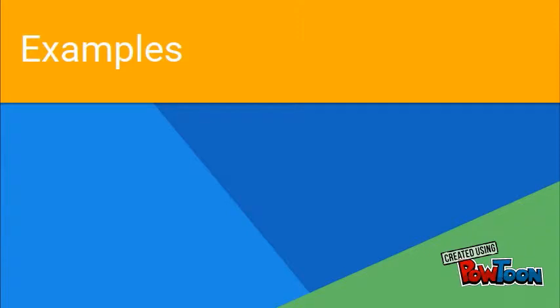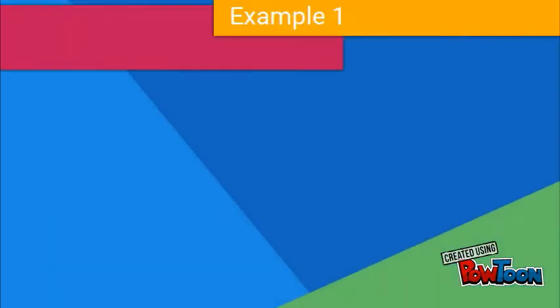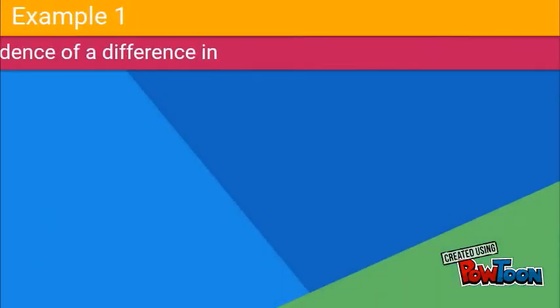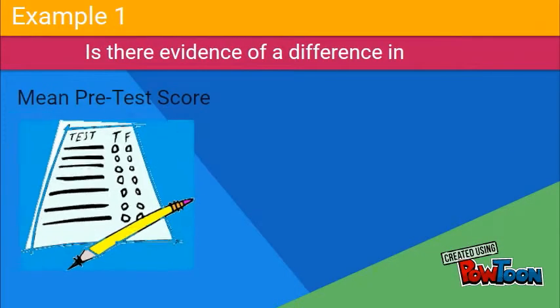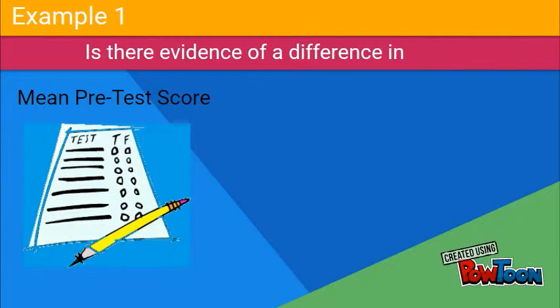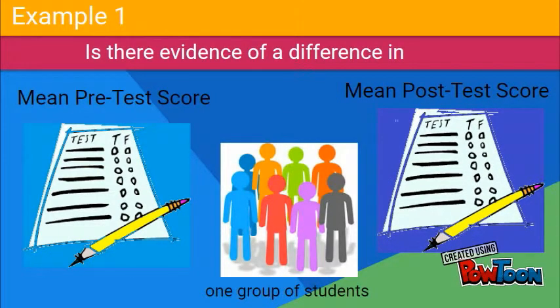Here are some examples in which a test for paired population means can be used. Note the different ways in which the questions can be asked. Example 1: Is there evidence of a difference in the average pre-test and the average post-test scores of a group of students?